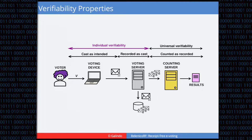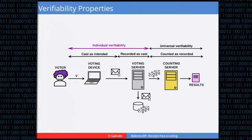We also have verifiability properties, because voting is a very sensitive, high-stakes operation. Smart devices are used in several parts of the procedure: the voting device, the voting server, and the counting server. We want to guarantee no one changes a vote at any of these steps. Cast-as-intended verifiability covers the voting device changing a vote; recorded-as-cast covers an attacked voting server; and counted-as-recorded covers the counting server.